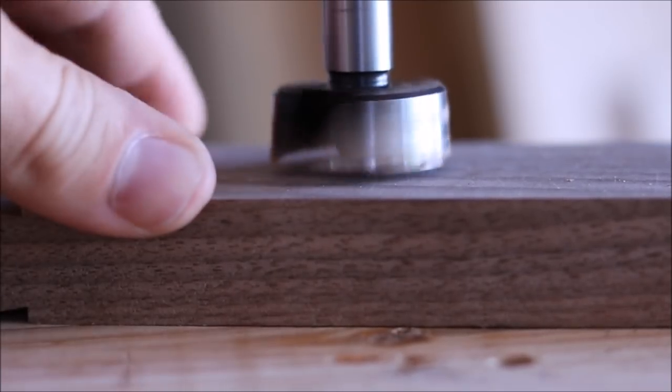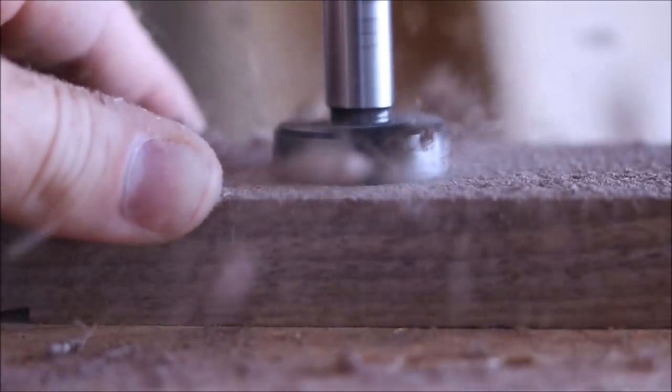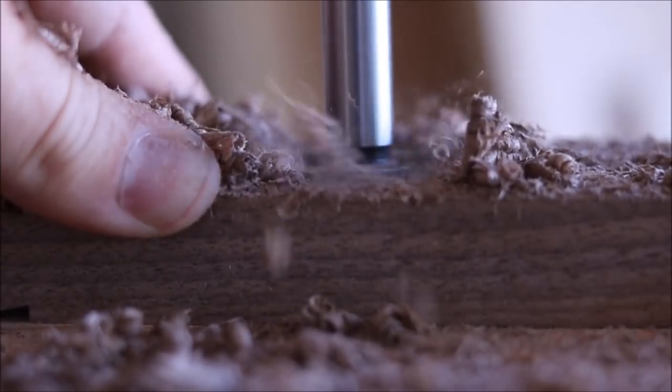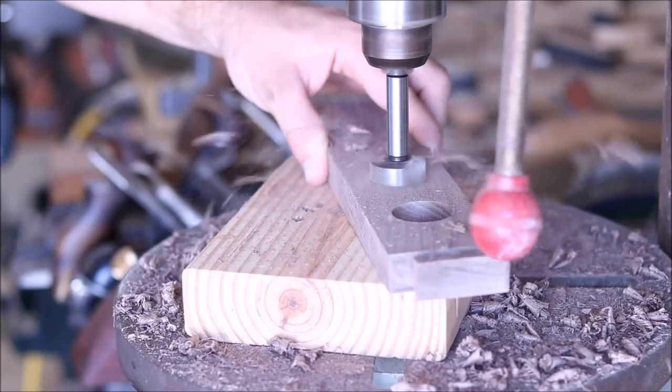Now I'm going to take a Forstner bit and drill out eight holes on what's going to be the top rail so that the pool cues can go through those.